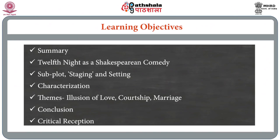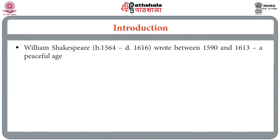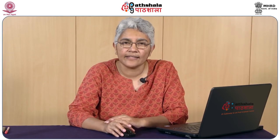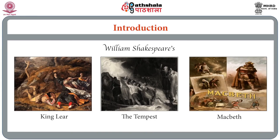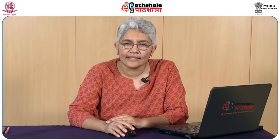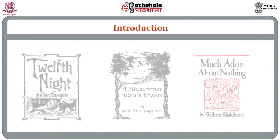William Shakespeare wrote a total of 37 plays, usually divided into tragedies, comedies and historical plays — a categorization given in the first folio published in 1623. We also have an additional category: the tragi-comedy or romance, four or five plays written towards the close of his career that begin with tragedy but end with a happy or comedic resolution. His comedies include early works such as The Comedy of Errors and The Taming of the Shrew, and later comedies of which the most famous are Twelfth Night, A Midsummer Night's Dream, Much Ado About Nothing and As You Like It.